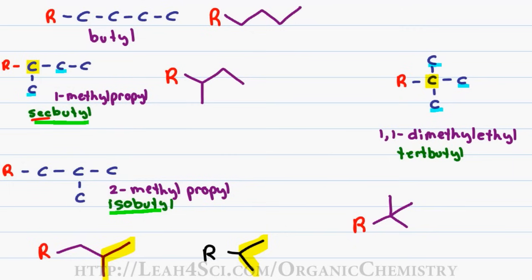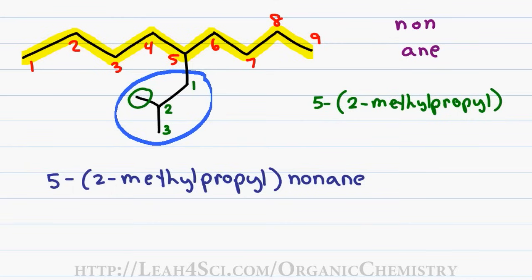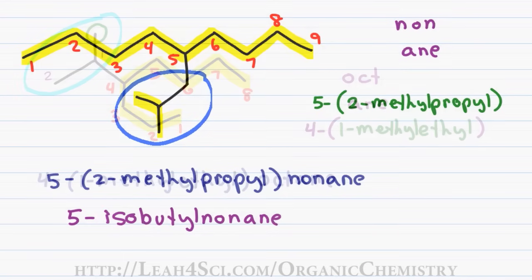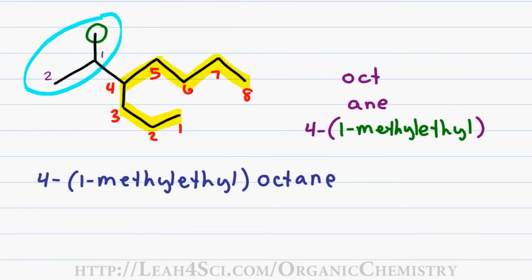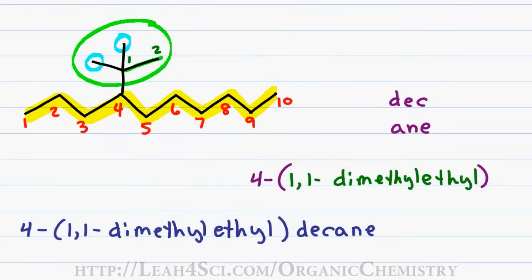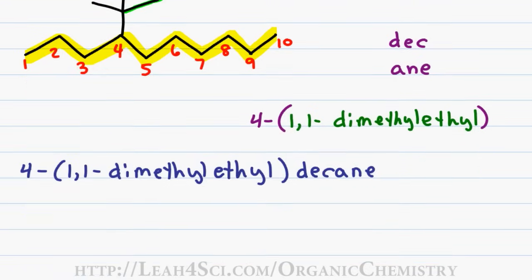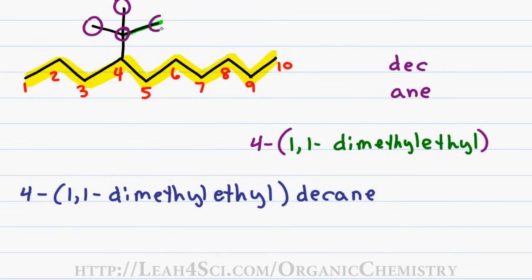Now that we know how to name the special isomers, let's revisit our original problems to make those names shorter. For our first example, 5-(2-methylpropyl)nonane — analyzing the substituent, this is an isomer of butyl with that fork or branch at the end, making it an isobutyl group, giving the simpler name 5-isobutylnonane. Our second example, 4-(1-methylethyl)octane, is an isomer of a propyl substituent — again the branch tail tells you it's an isopropyl group — giving 4-isopropyloctane. Our final example, 4-(1,1-dimethylethyl)decane, is simply an isomer of the butyl substituent. With a central carbon having 3 carbons coming off it, we recognize it as tert-butyl, giving a final name of 4-tert-butyldecane.